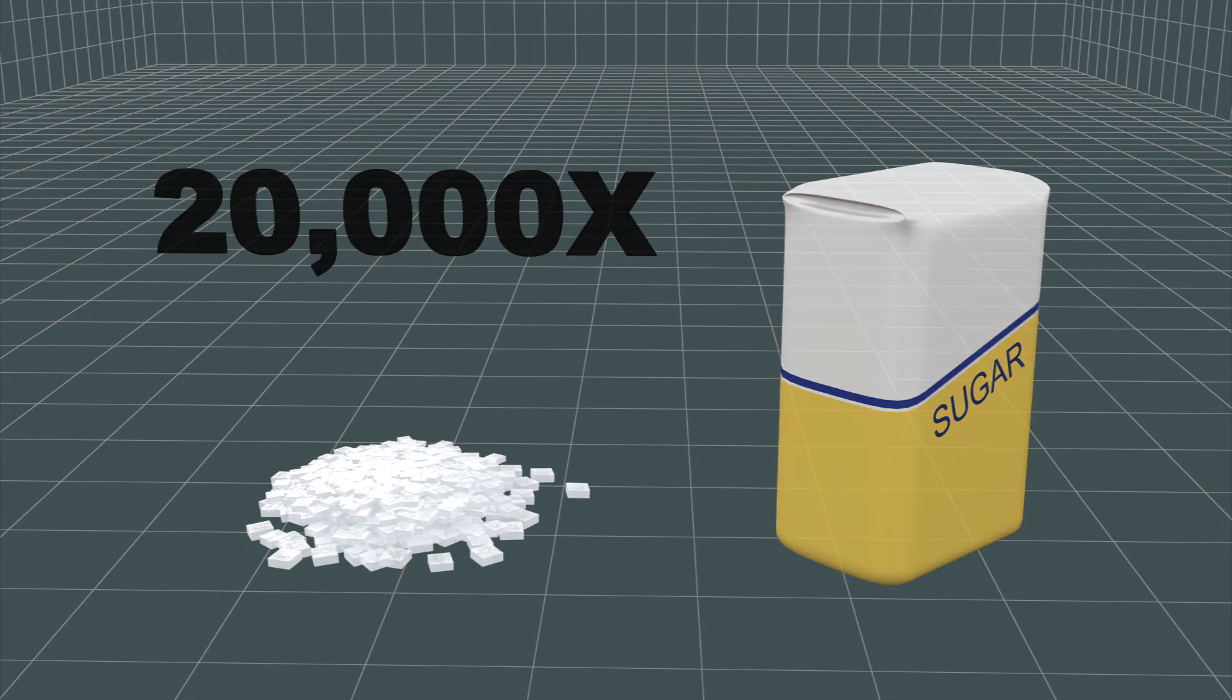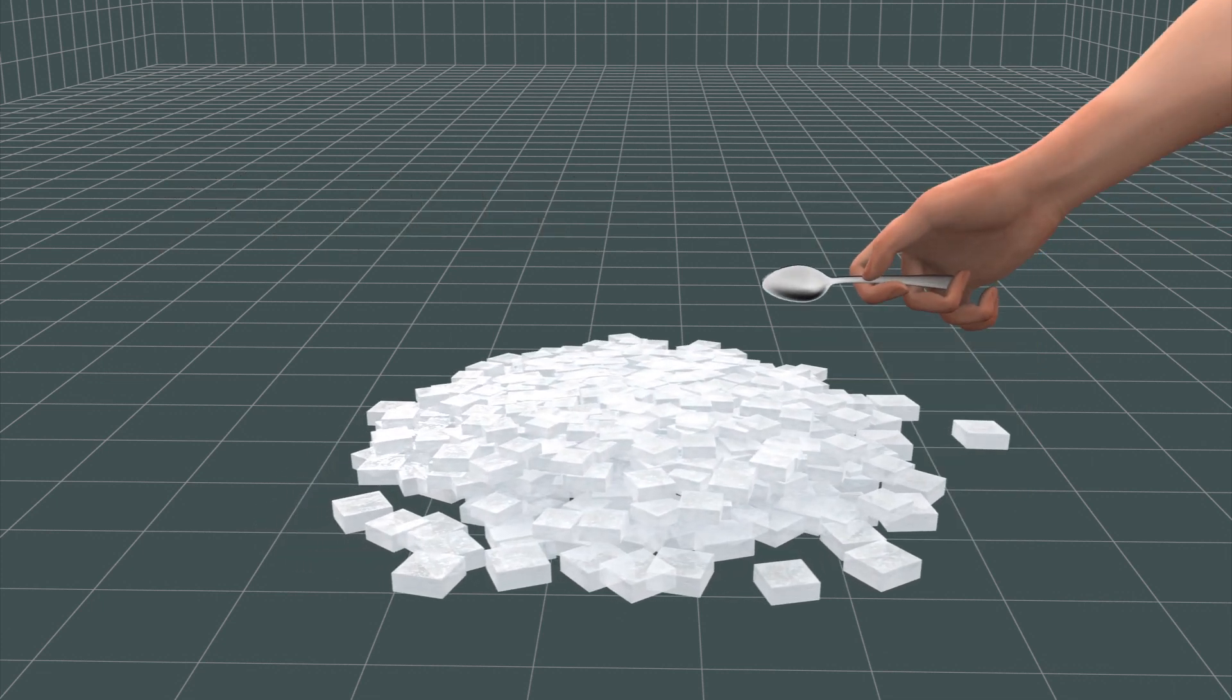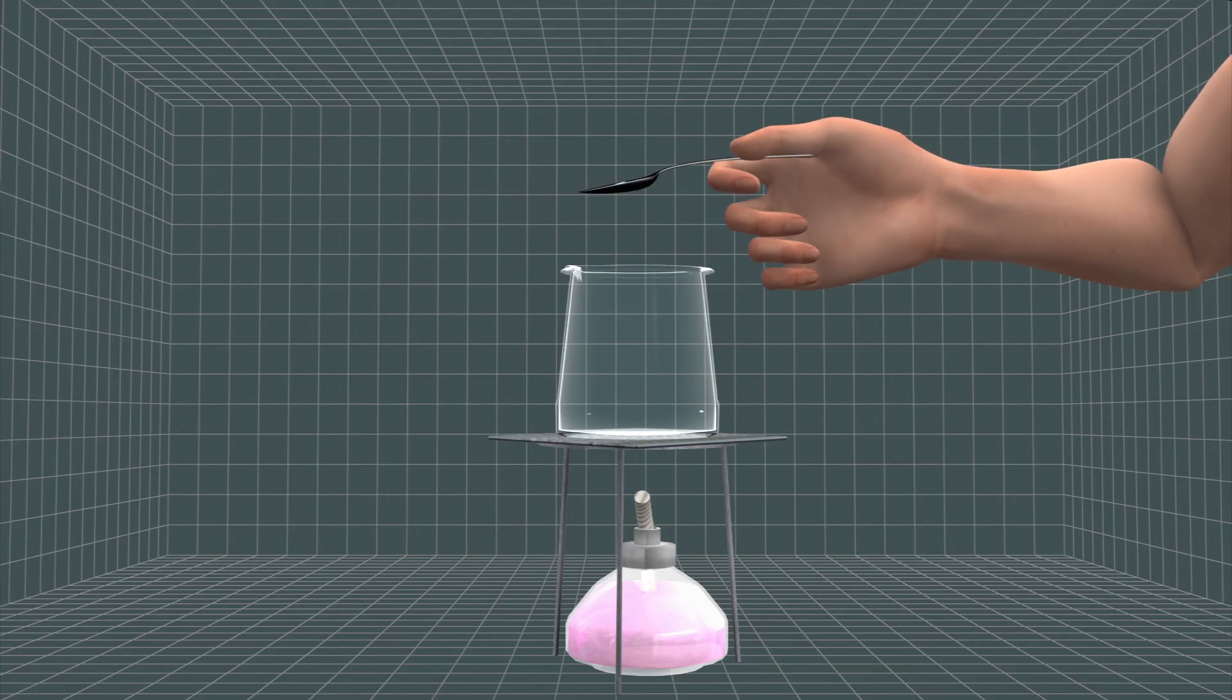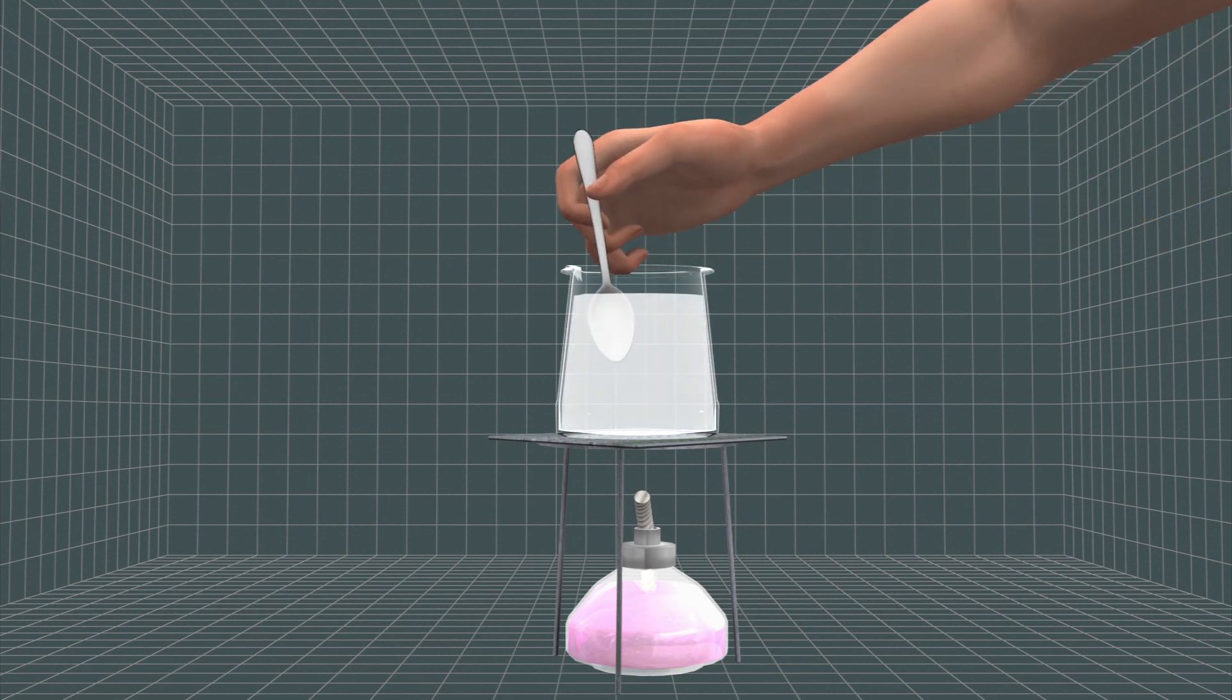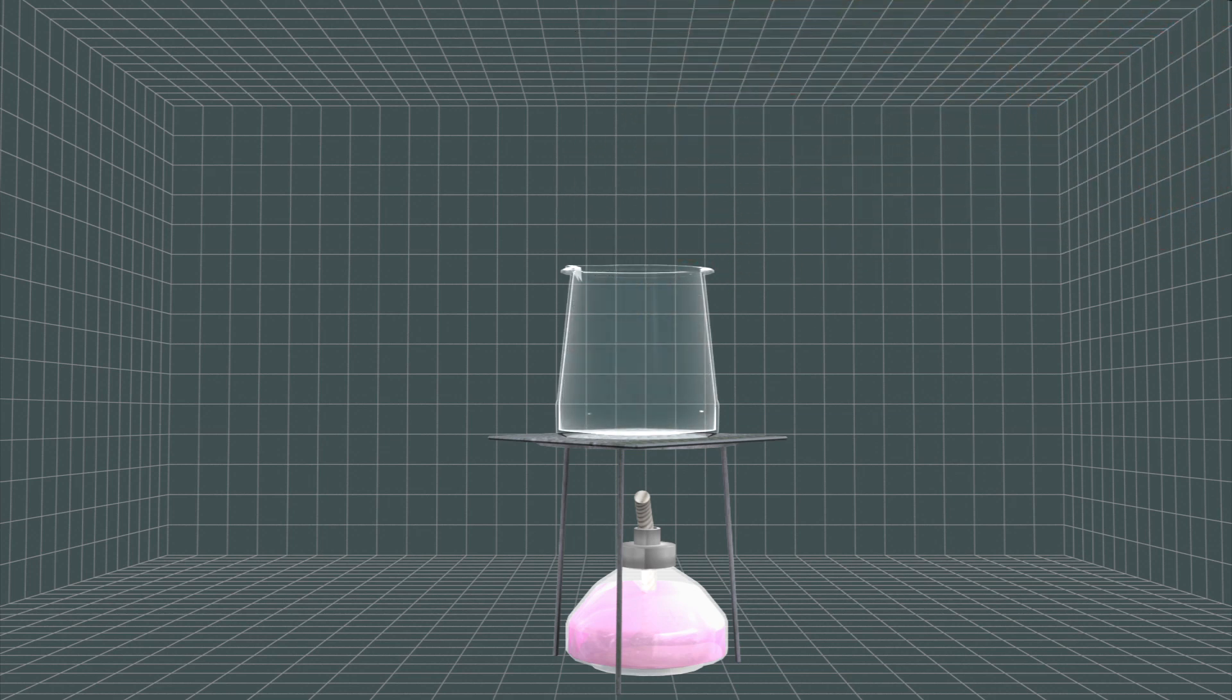Avantame is a white powder that is 20,000 times sweeter than table sugar. Avantame is water-soluble, and its chemical makeup cannot be altered under heat during cooking and baking.